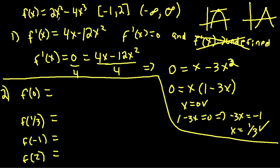So f of 0 evaluated at this original function, now we're not using the derivative, just the original function. So plugging in 0 into 2x squared minus 4x cubed, we'll get 0, simple.